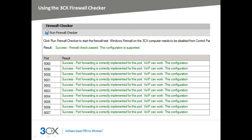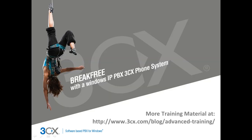Now we have completed the configuration on the WAN-to-LAN device. All the ports required by 3CX phone system for SIP, tunnel and audio connections are correctly forwarded. This brings us to the conclusion of this video. Please check our other videos at the link provided.